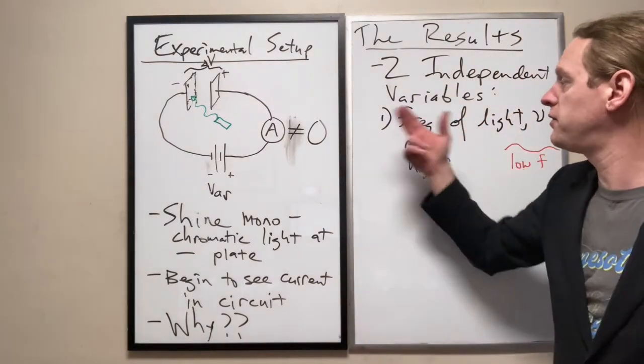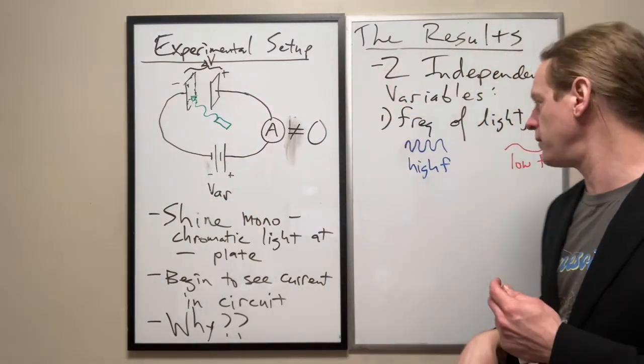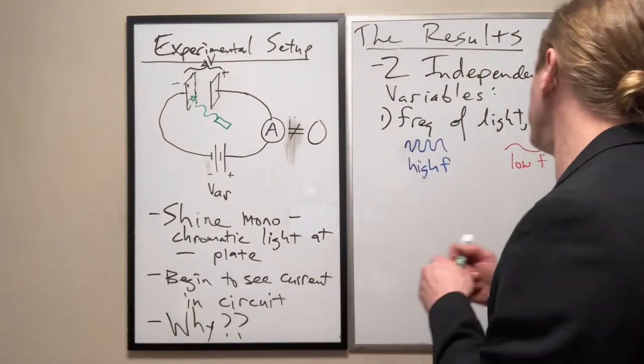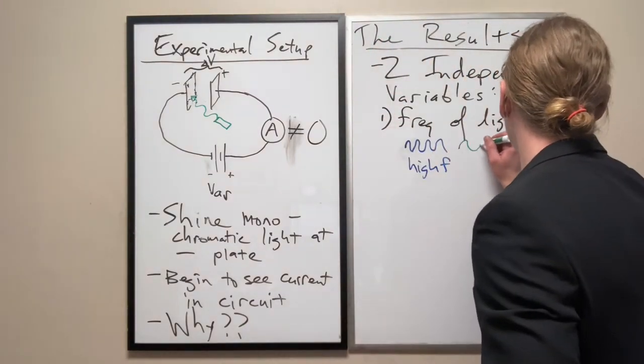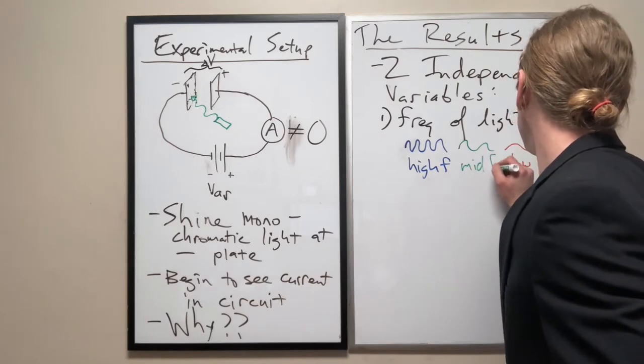And the further into say the UV X-ray and gamma ray range, the higher the frequencies get. Now in the middle ground, there's the green light, which is kind of in the middle. So a middle frequency.